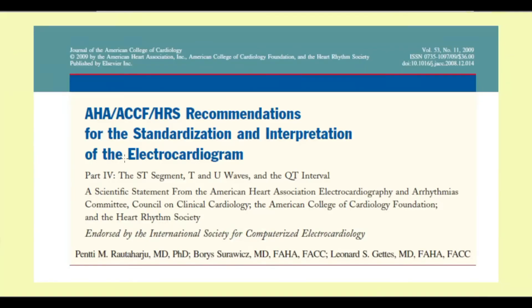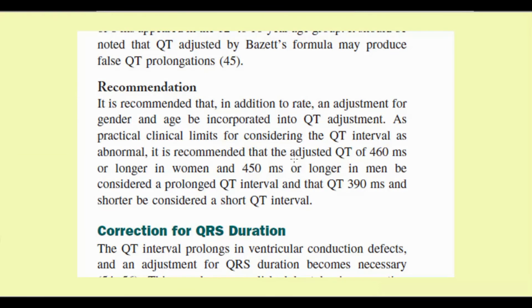For understanding normal ranges of QT interval, let's check the American Heart Association recommendation for the standardization and interpretation of electrocardiogram, exactly part 4. As a practical clinical limit for considering the QT interval as abnormal, it is recommended that the adjusted QT of 460 ms or longer in women and 450 ms or longer in men be considered as prolonged QT interval, and that QT 390 and shorter be considered as a short QT interval.